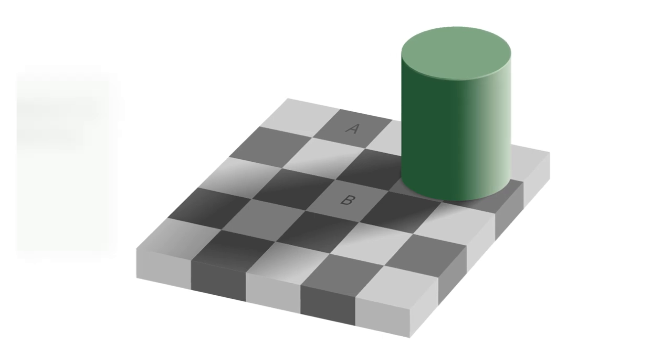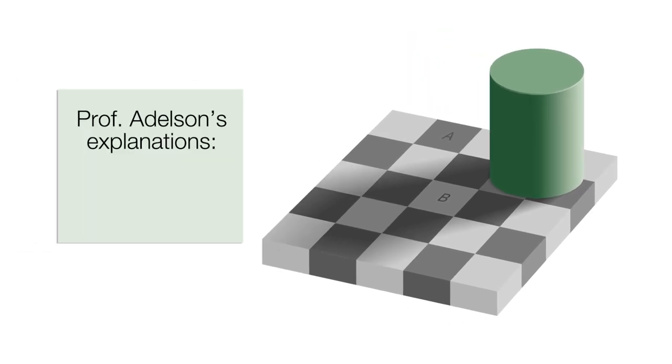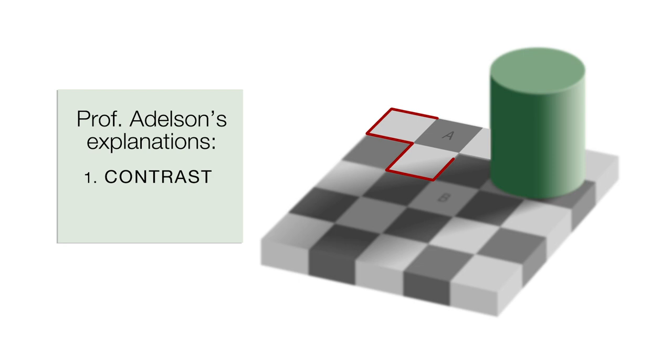Why? Professor Adelson points to two specific details. First, contrast. A looks darker because it's surrounded by lighter colored squares. The opposite is true for B.